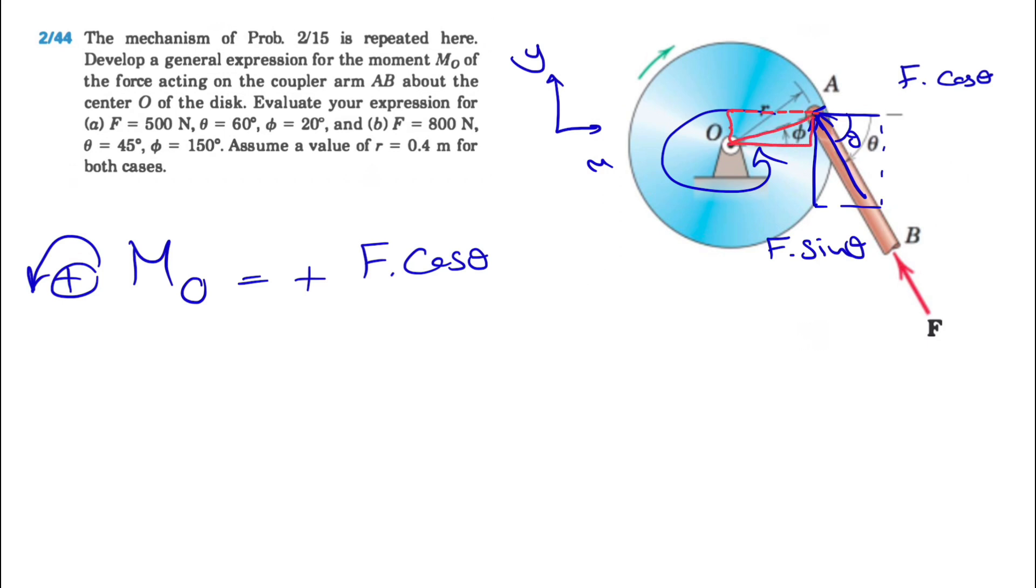So the distance that we have is this is the line of action, and we're interested in this distance. And if we look at this right triangle here, you know the angle is phi and the hypotenuse of that triangle is r. So basically we have r times sine of phi for the position vector or the distance vector. So that was the moment of the horizontal component.